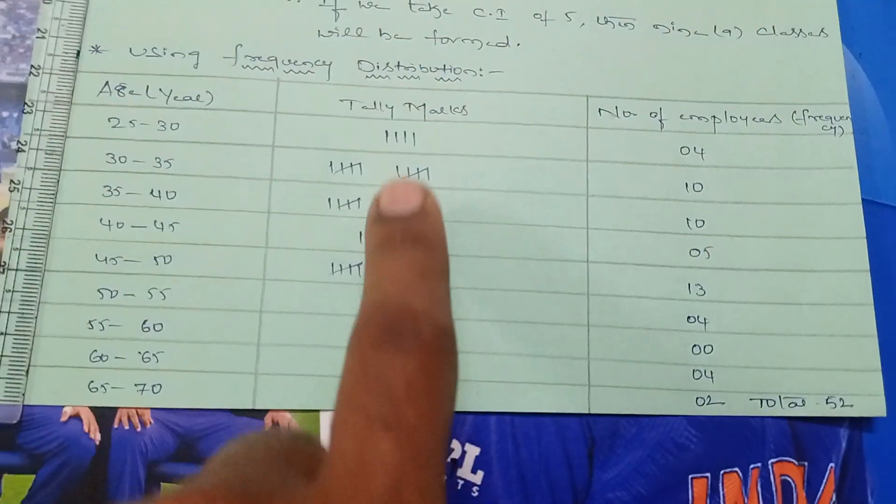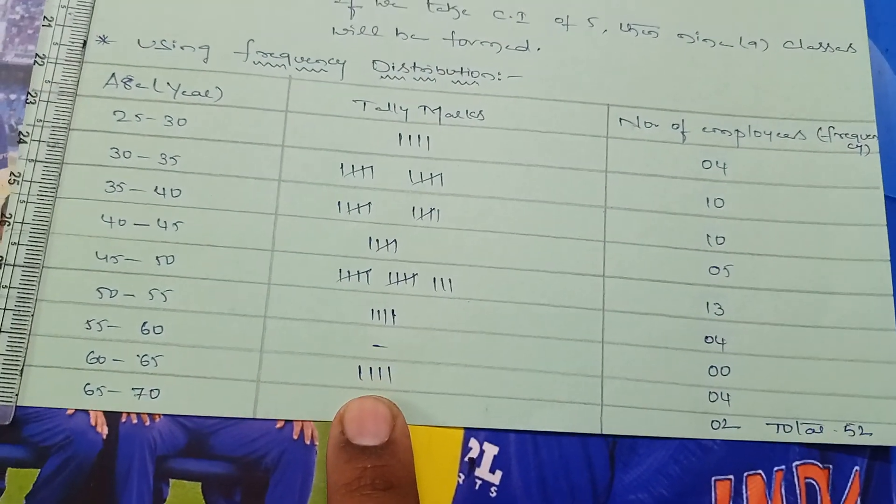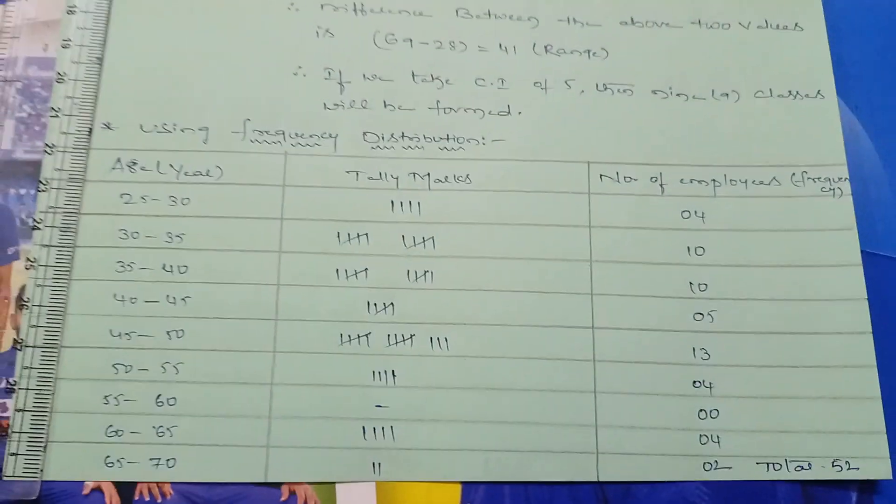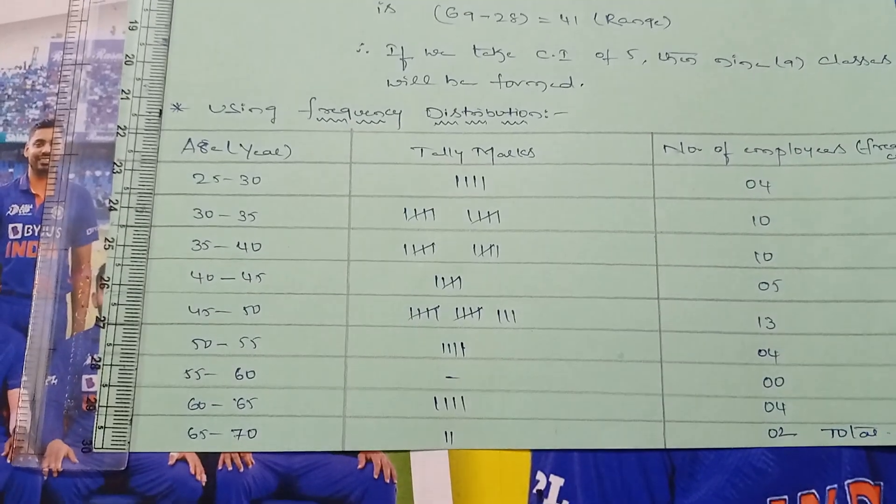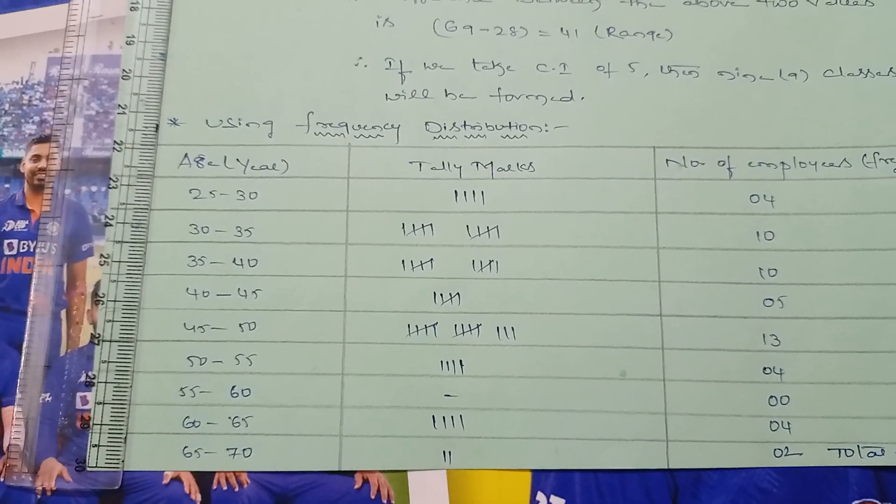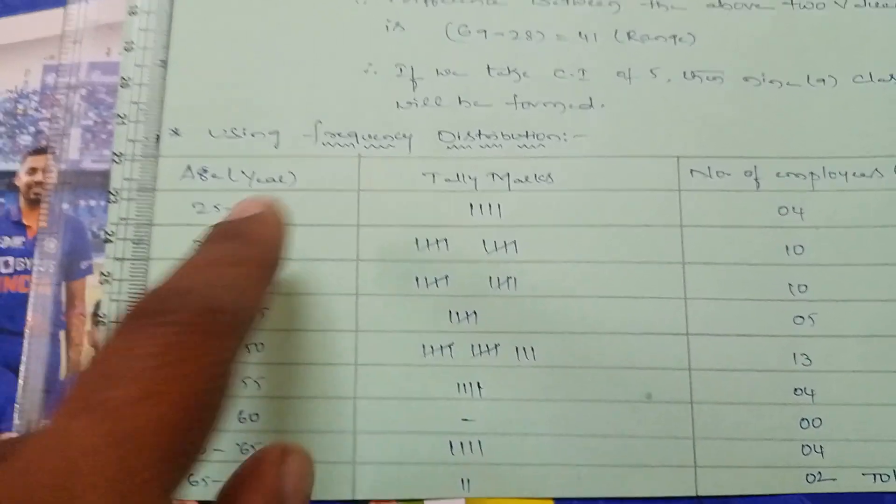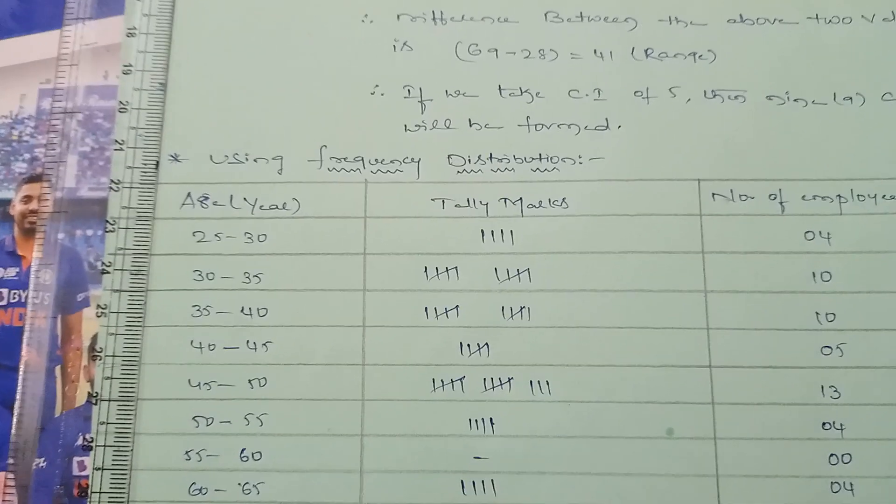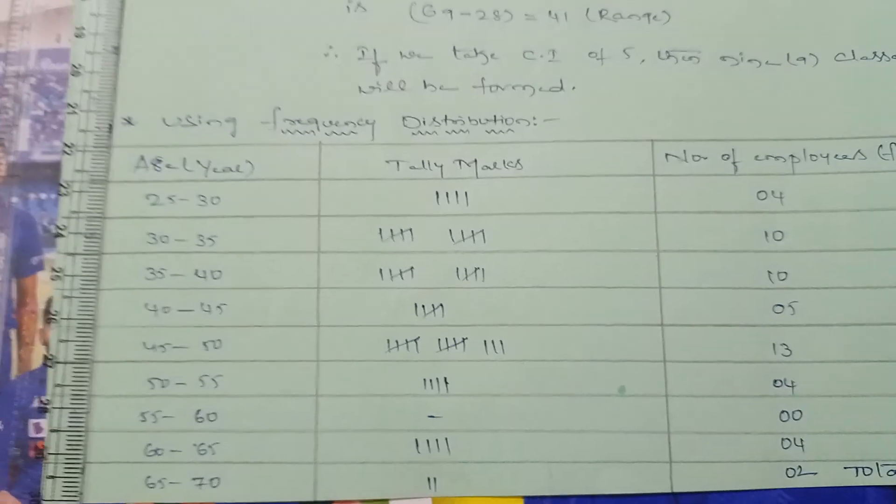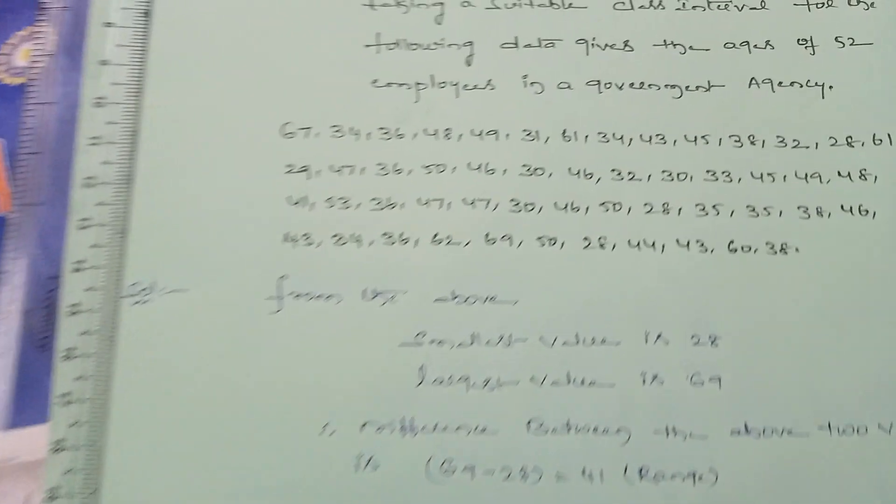These vertical bars are generally called tally marks. This is how we represent raw data into meaningful data. We use class intervals here as groups, therefore converting ungrouped data into grouped data.